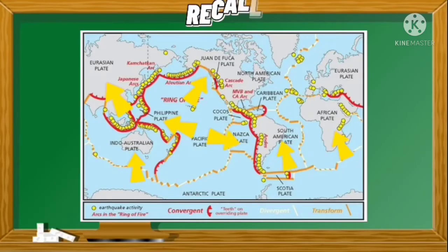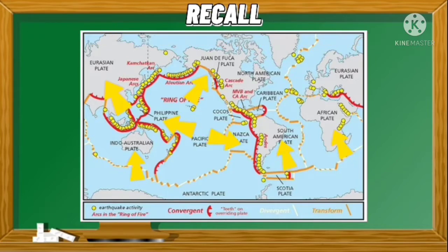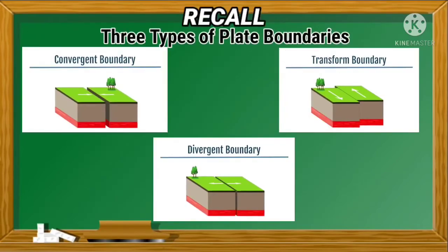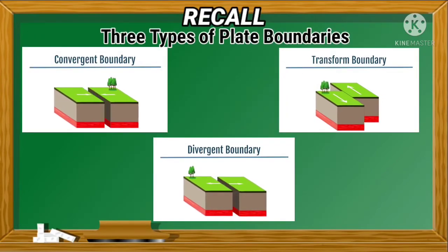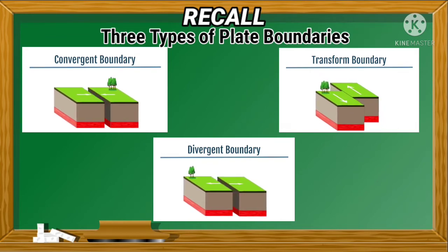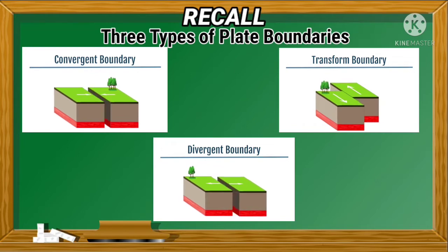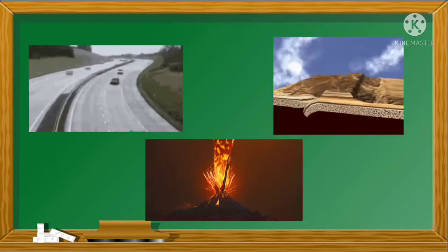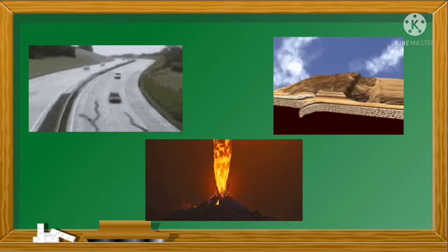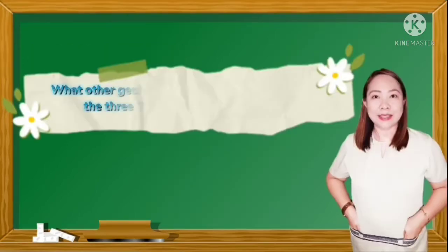You have learned from our previous lesson that tectonic plates are slowly moving in different directions. This movement of plates can be classified into three types of plate boundaries: namely convergent plate boundary, divergent plate boundary, and transform plate boundary. Along the plate margins, earthquakes, volcanoes, and mountain ranges are being formed.